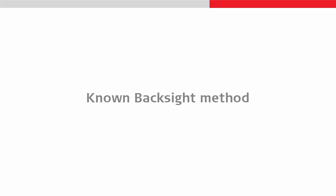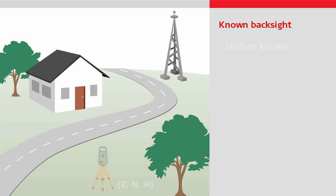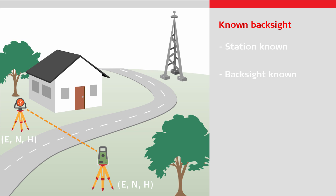Use the known back sight method in the following case: if the point over which you will position the total station is known, there is only one back sight, and the point over where the back sight is located is known. Normally this will be a prism mounted on a tripod, but it could also be a reflective tape mounted on a wall or even simply a mark on a wall. You don't need to be able to measure a distance to the back sight — that's optional — but you do need to be able to see the back sight.